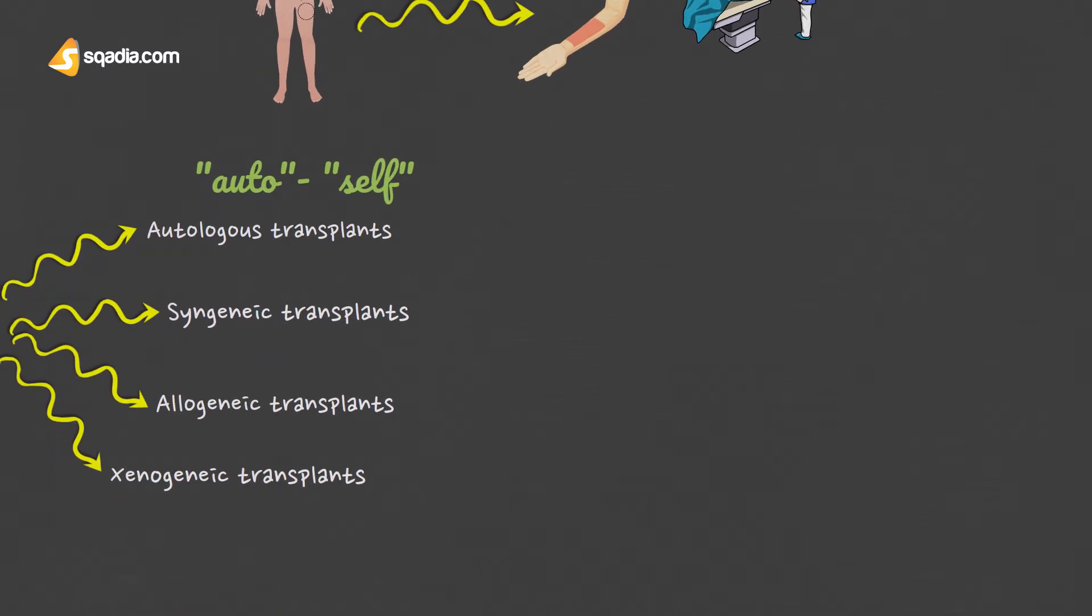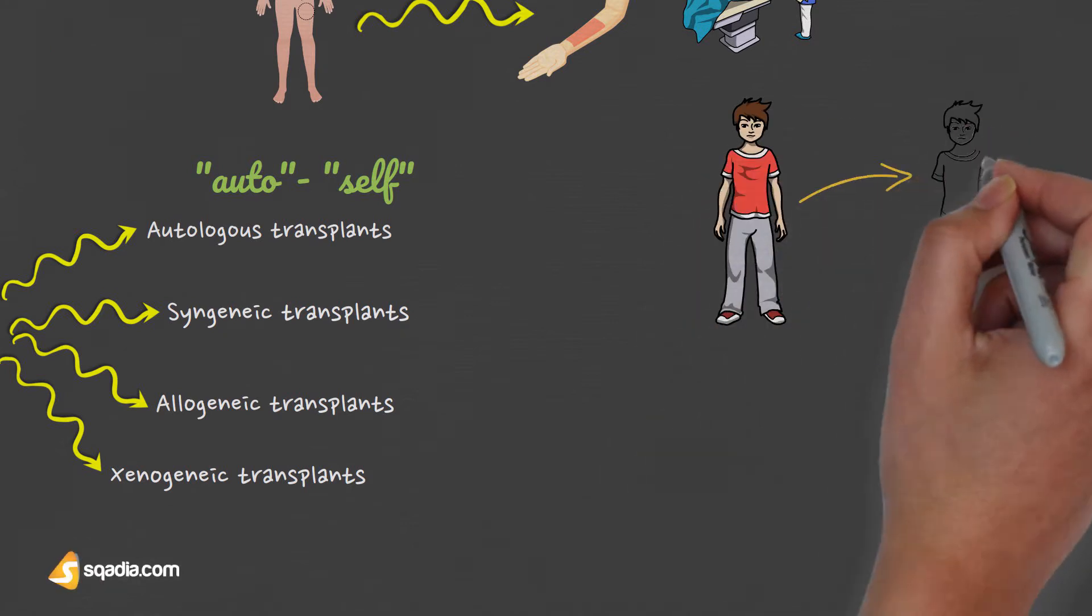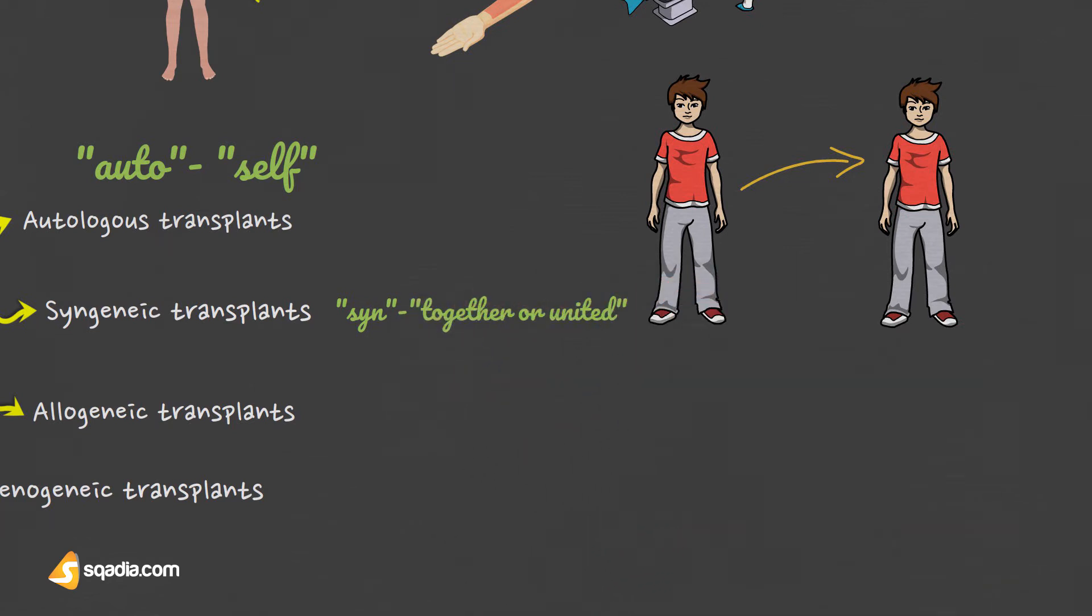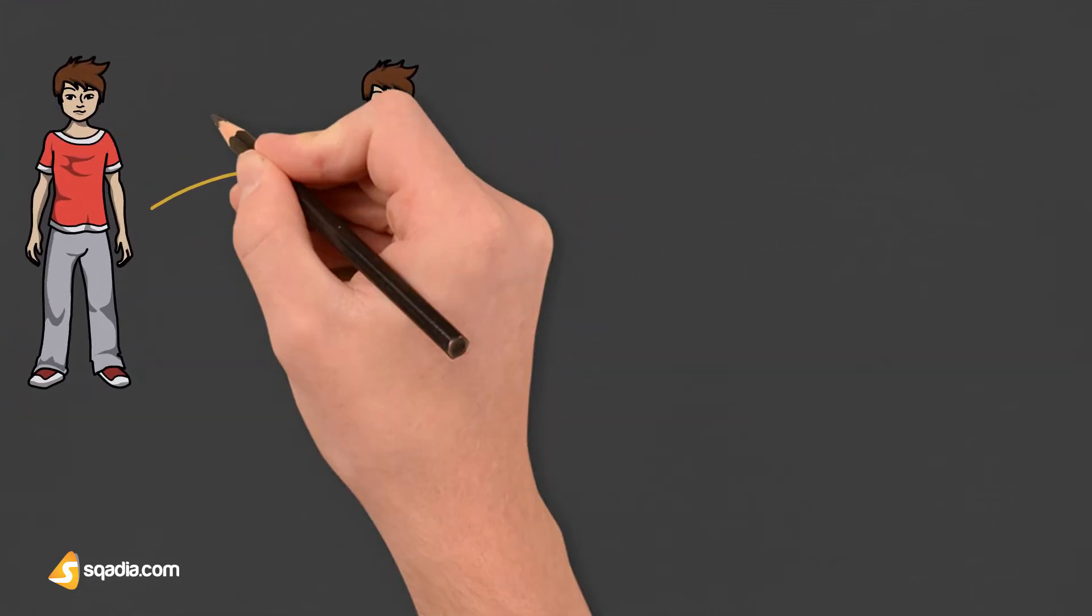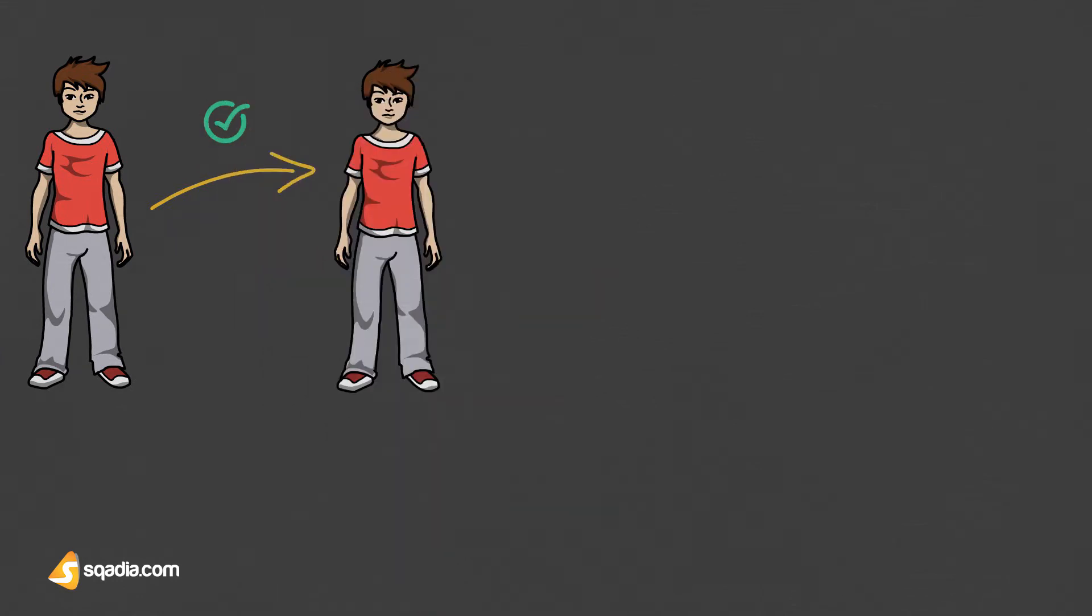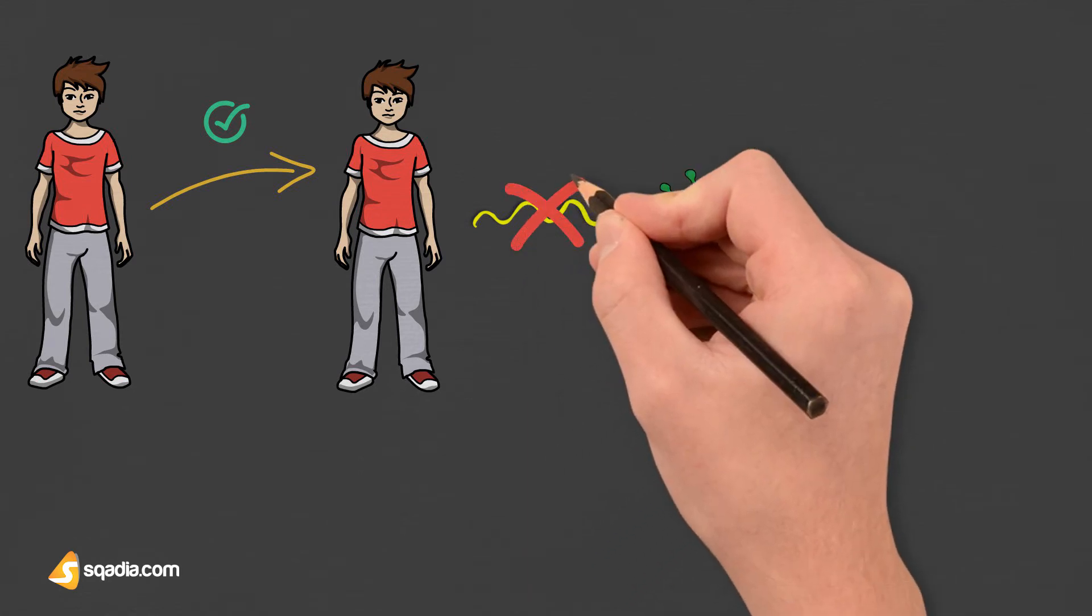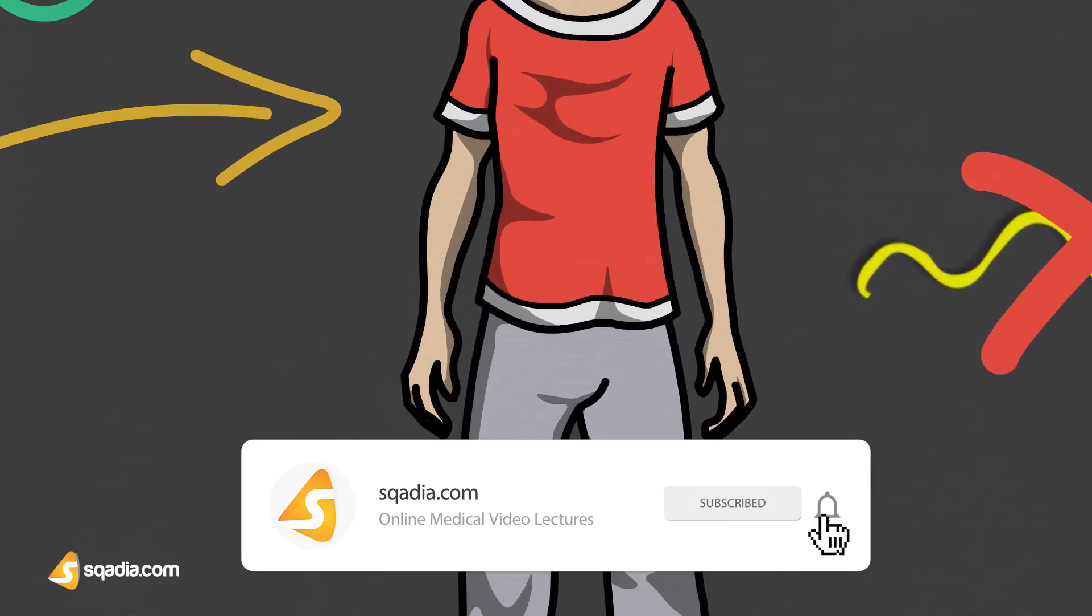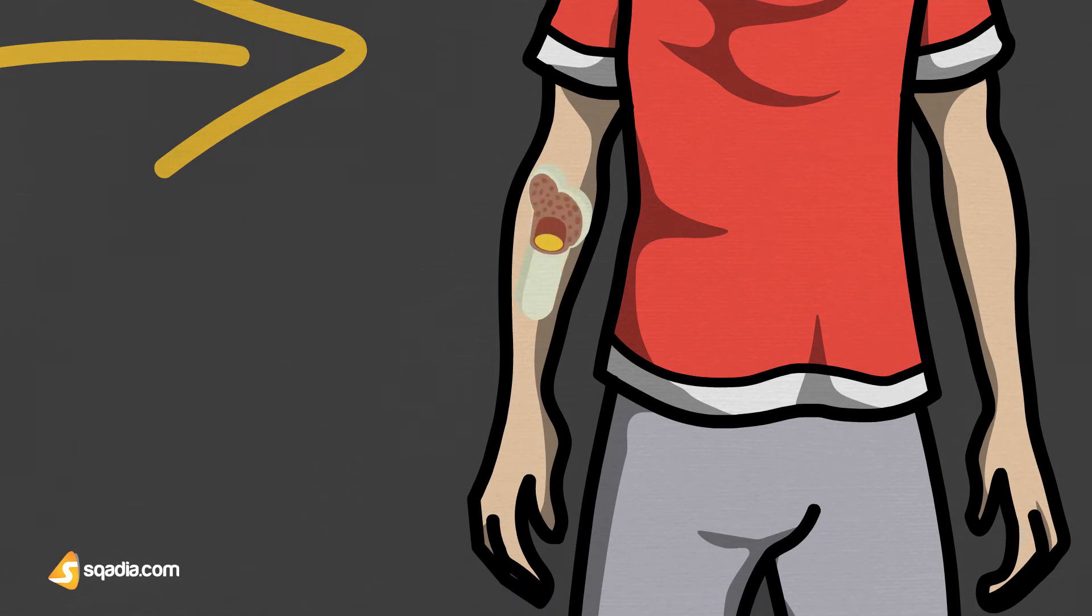Then we have syngenic transplants or isografts. This is a transfer between identical monozygotic twins. Syn means together or united in Greek, and syngenic means genetically similar or identical, hence they are immunologically compatible. Transplantation does not provoke an immune response. These are the least complicated transplants because there is no risk of rejection. Bone marrow transplant is a very common example.